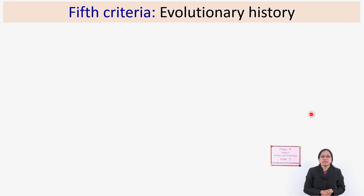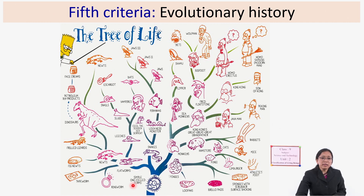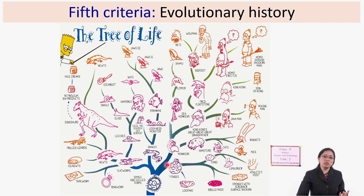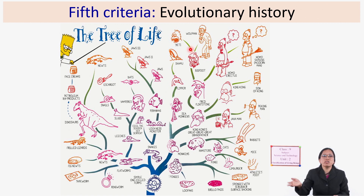The fifth criteria is evolutionary history — how organisms are evolving and originating, and which ones evolved first. Based on this, there is a 'tree of life': very primitive organisms like prokaryotes are at the base, then unicellular eukaryotes, then multicellular organisms, then tissue-graded, organ-graded, and system-graded organisms, and finally the most advanced organisms. This evolutionary trend is another criteria for the classification of living organisms.